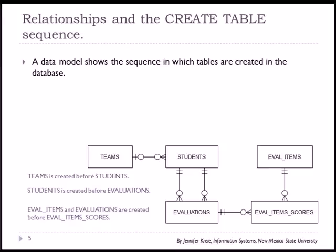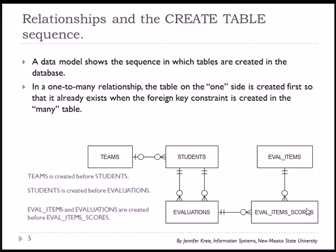Here is our data model which shows how things will be built. We have teams, students, evaluations, evaluation items, and eval item scores. In a one-to-many relationship, the one side has to be created first. So teams will be created, then students, then evaluations, then eval items, and finally eval item scores.